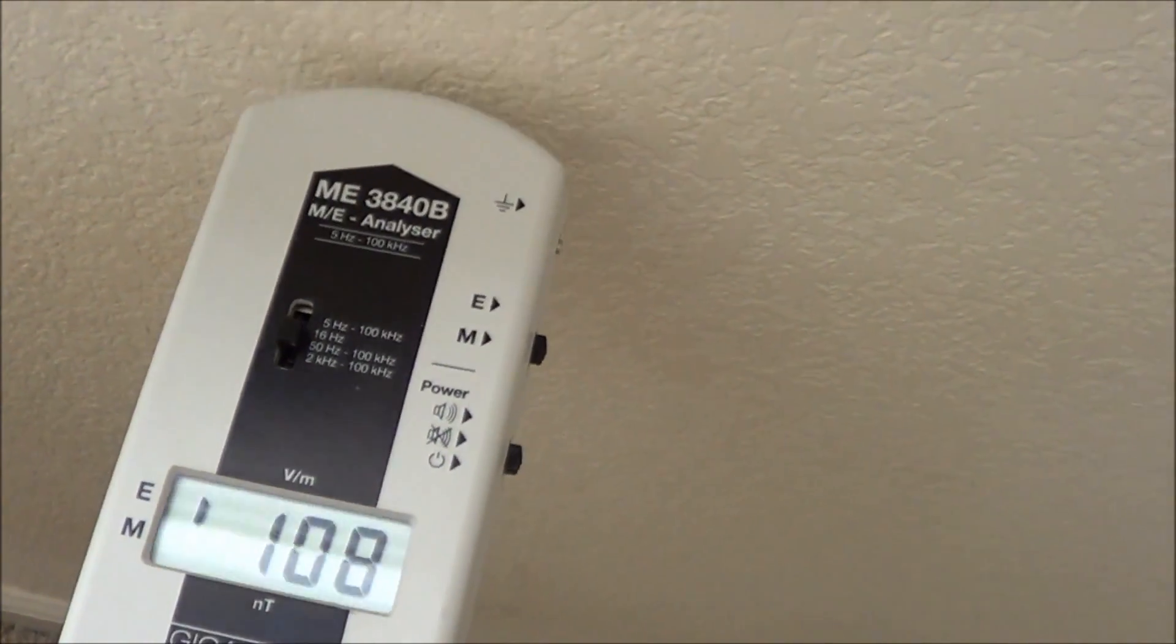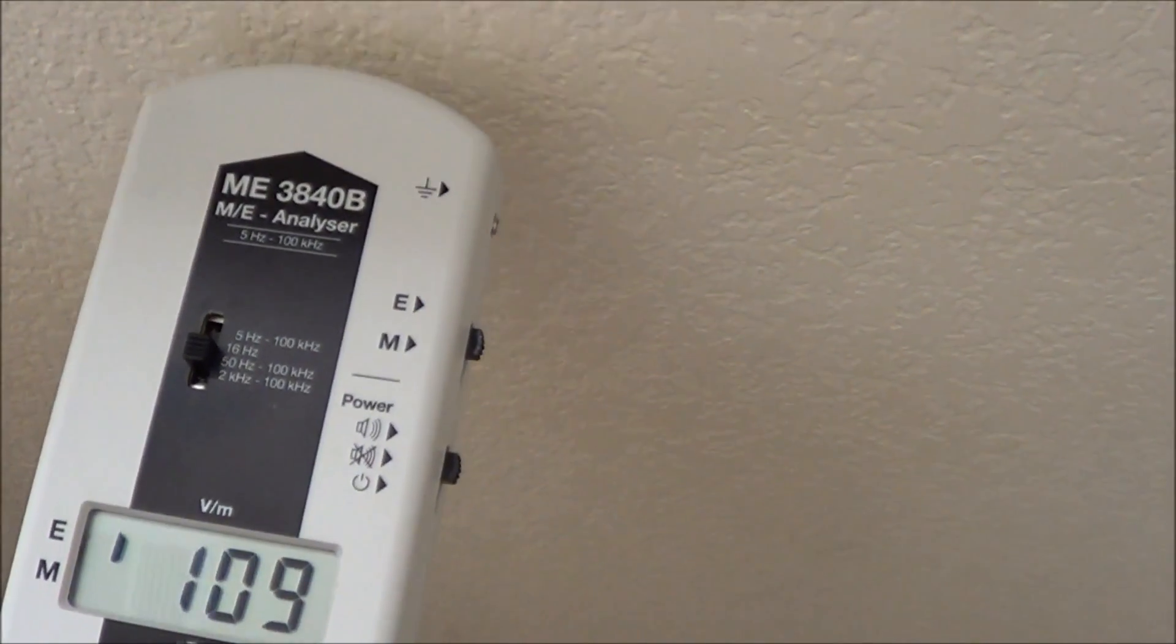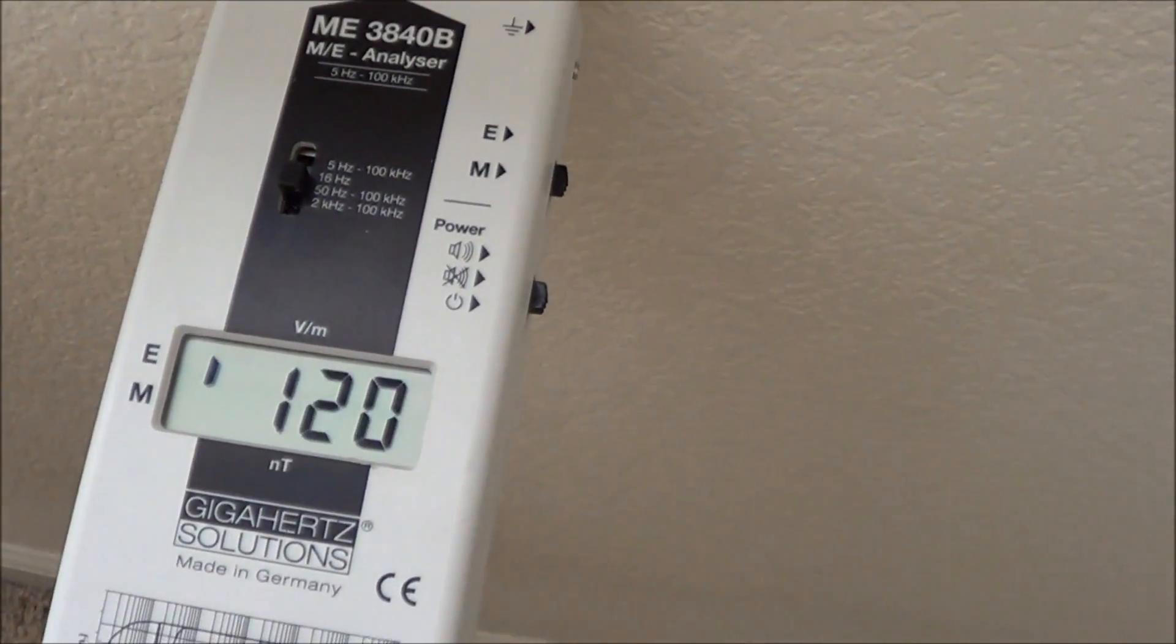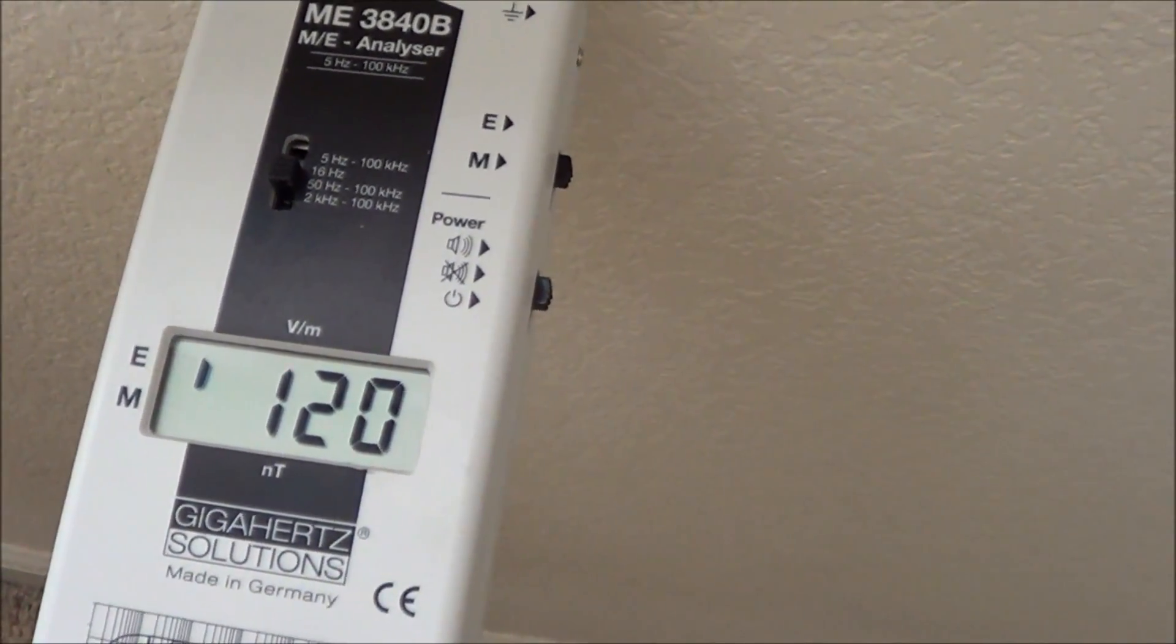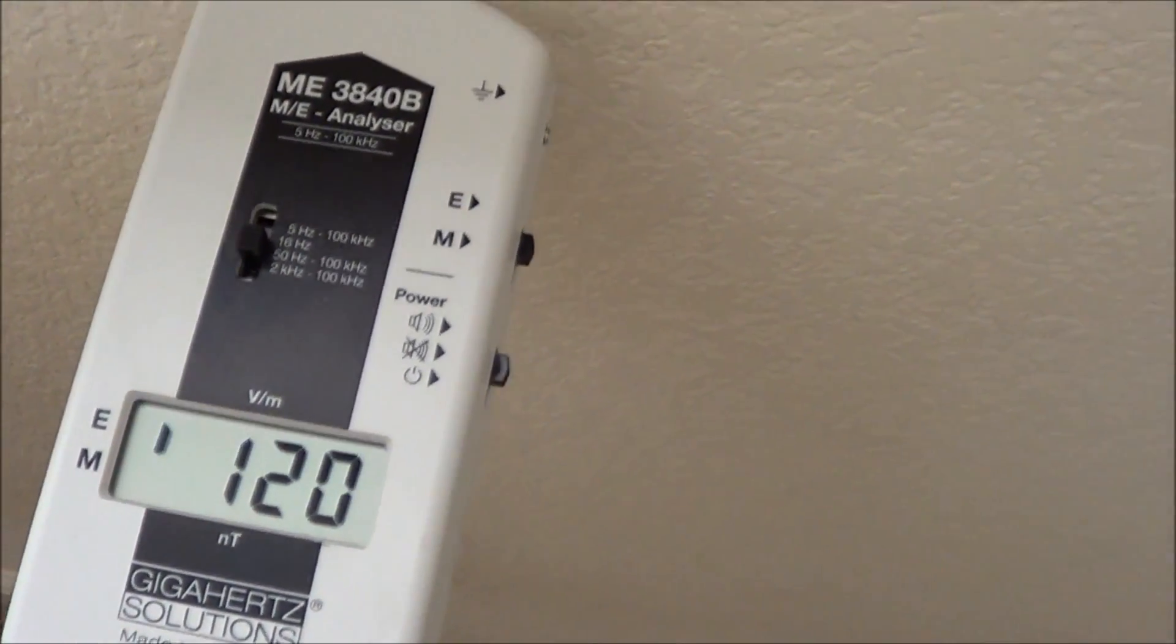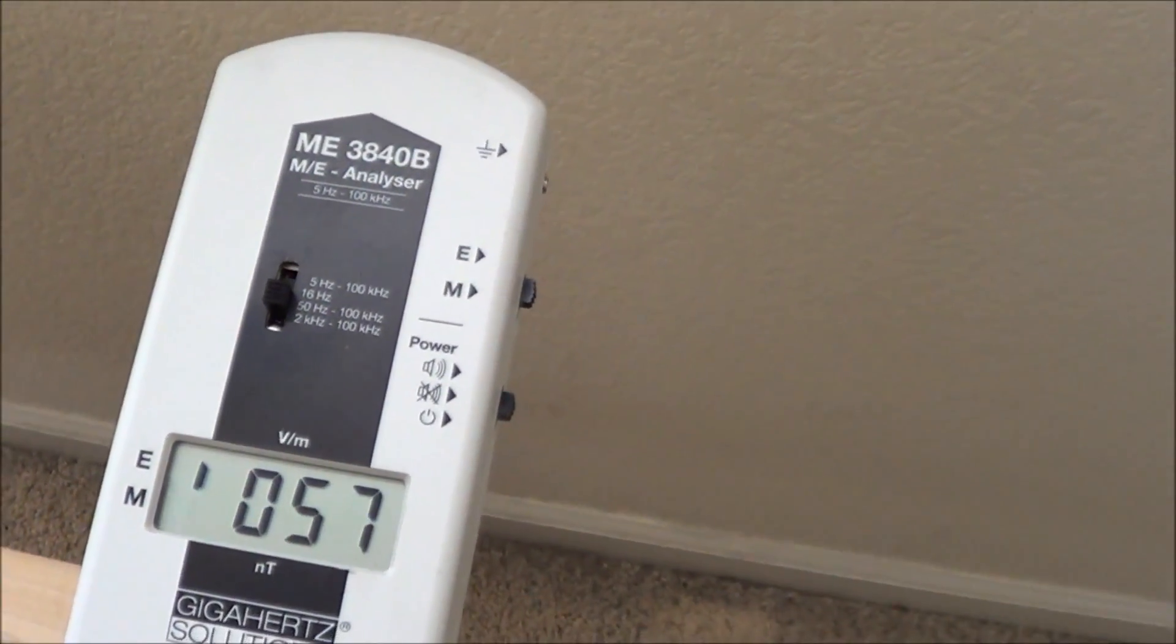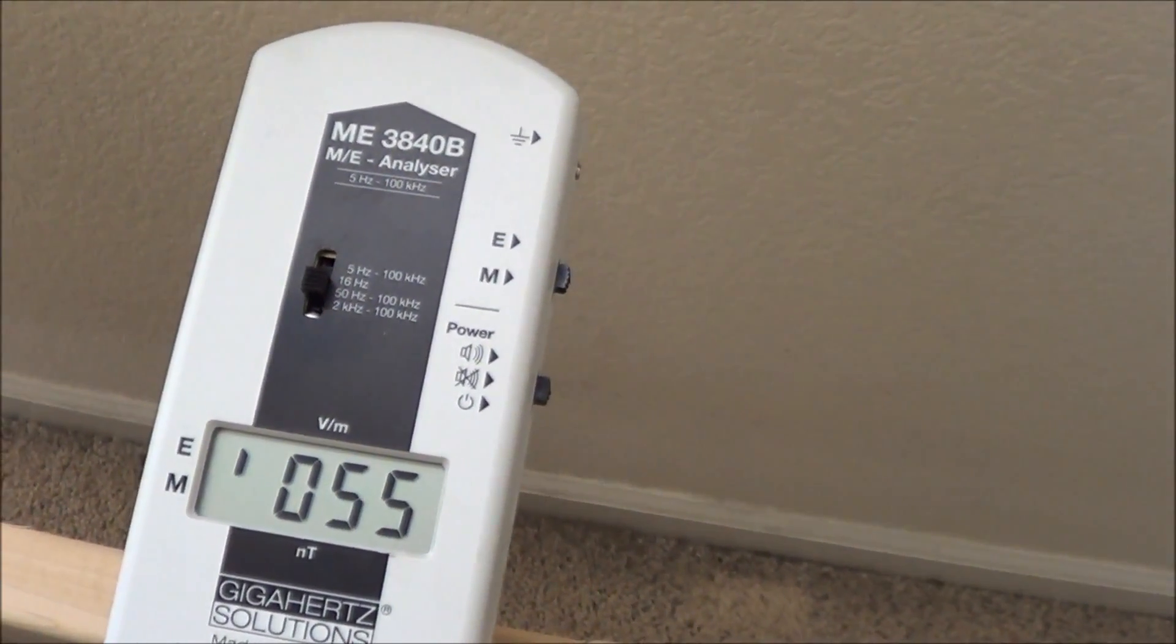And because there's wiring in the wall, and these wires are giving off electric fields, you can see that the meter is measuring about 120 volts per meter. And as soon as we back off from the wall, it starts to drop.